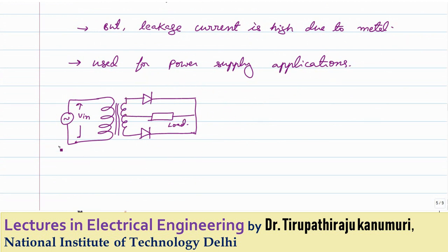Schottky diodes are practically used as rectifiers with a center-tap transformer, where one diode conducts during the positive half cycle and the other during the negative half cycle. Only one diode conducts at a time, so the drop is only 0.3–0.4 V. In a bridge rectifier, two diodes conduct simultaneously, doubling the voltage drop. So wherever minimal voltage drop is critical, we use the center-tap configuration, not the bridge rectifier.